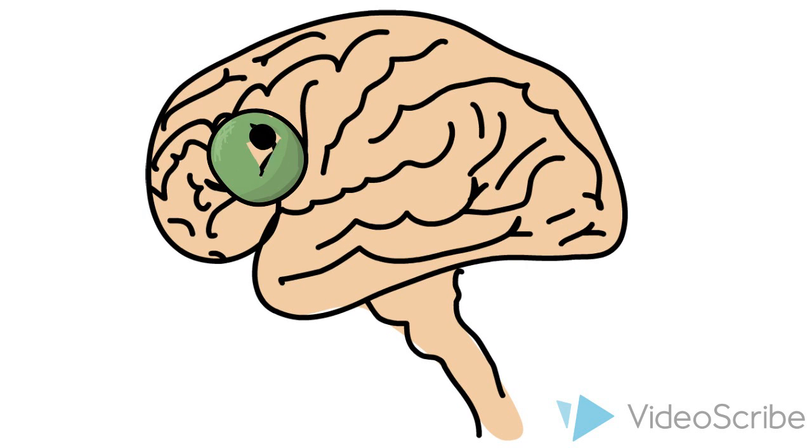The human brain is made up of thousands of different types of cells, and over 160 billion cells in total.